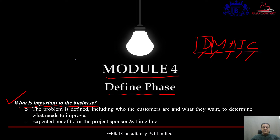In order to answer this question, in a narrow sense, we first try to identify who will get the benefit while we are solving this particular problem — that means, who is our customer. As we have discussed earlier, the customer could be the internal or the external customer. We need to identify who is the customer and what are their requirements — what they want from us — so we can improve according to the requirement of the customer.